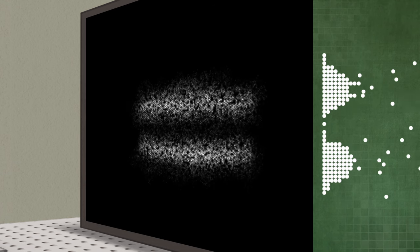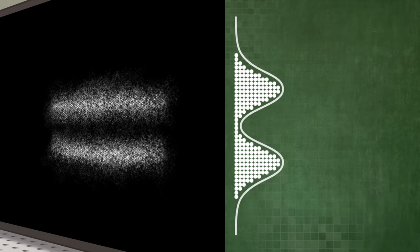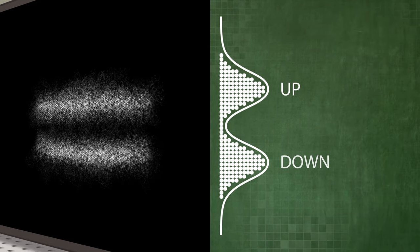However, the researchers observed that the beam was split in two possible states, which were later named spin-up and spin-down.